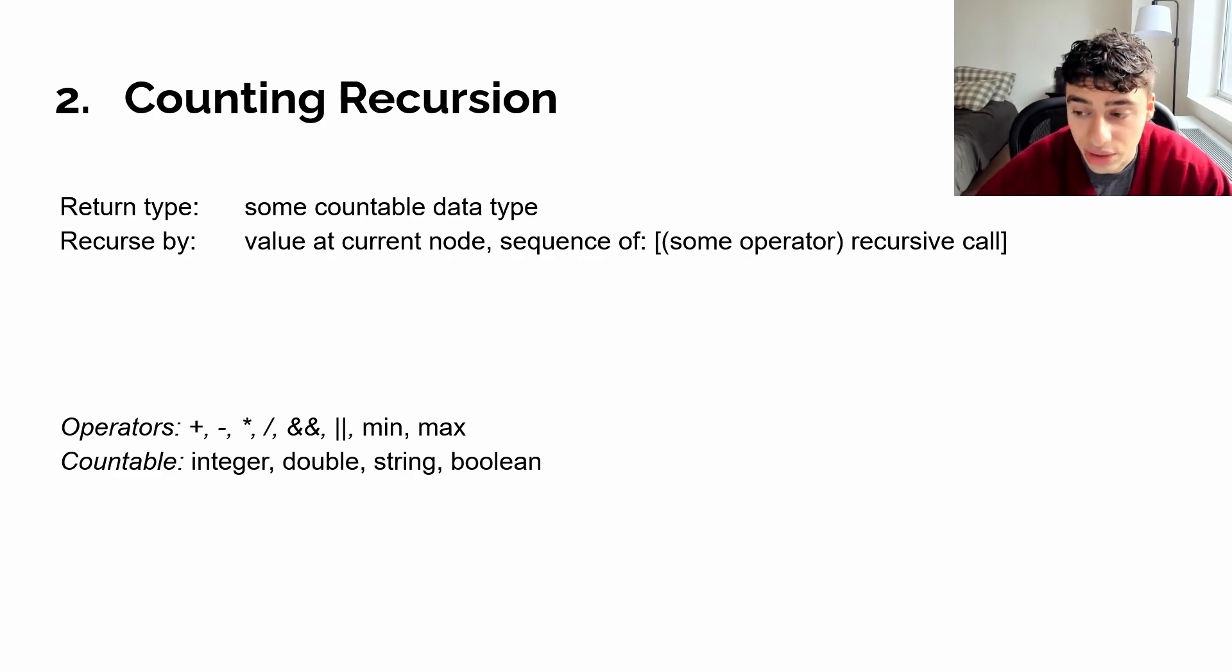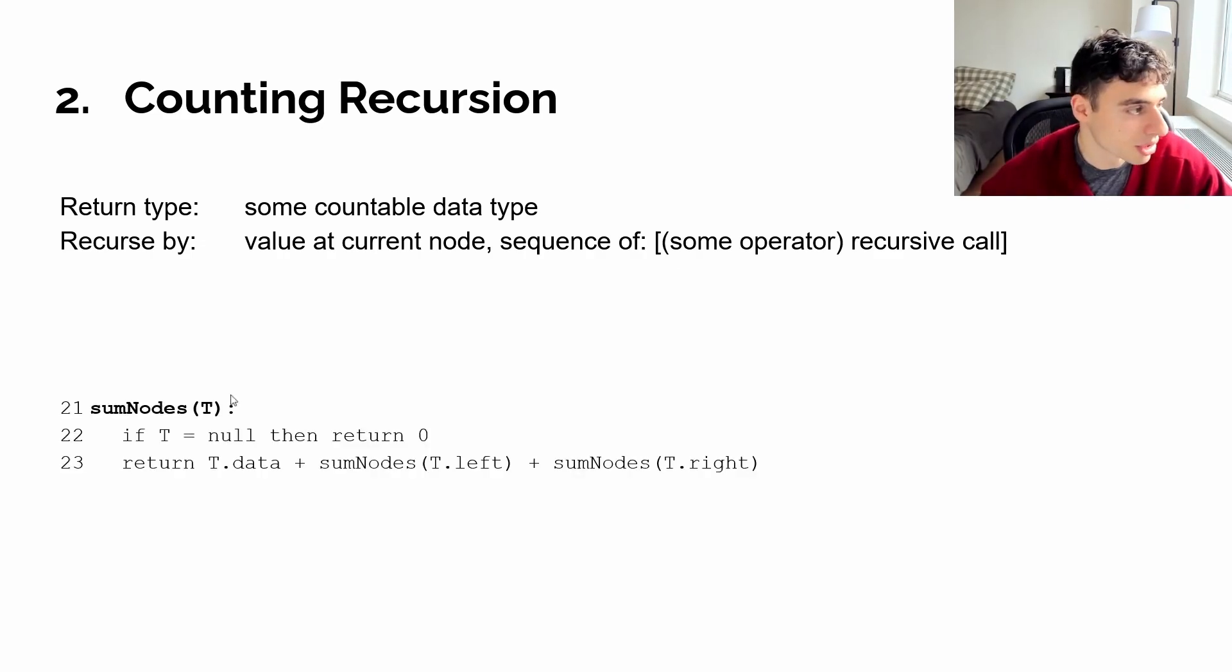Now, unlike in vanilla recursion, where we simply called a routine directly, counting recursion functions have to return a value that can be operated on by its parent frames. So, for example, we can take a look at the sum nodes problem. It's a typical problem where we just want to sum the values of all nodes in a binary tree.